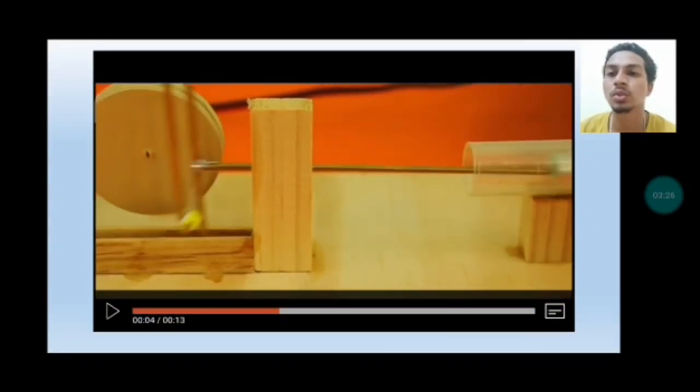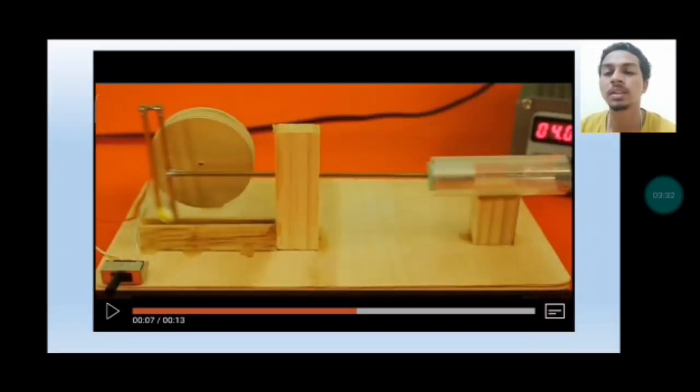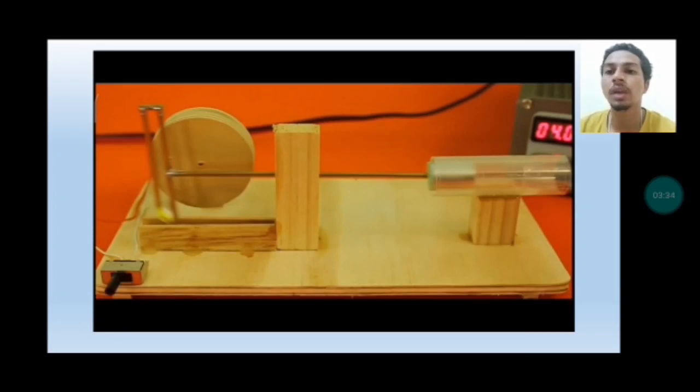This is the working video of the Scotch Yoke Mechanism. In this setup we have a motor which is attached to a rotary disc, and on the rotary disc we have a pin attached to it. On the pin we attach a slot, which we also call a slider.